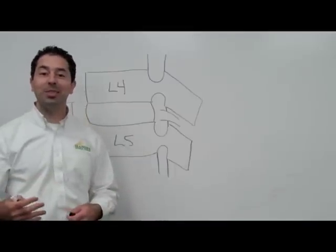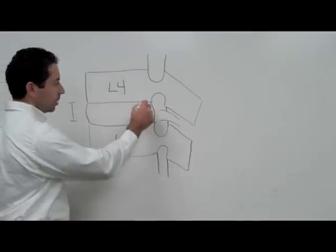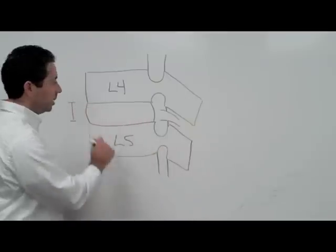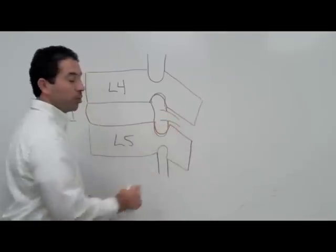Because of injury, because of aging, because of being out of shape, that space can shrink down. As this shrinks down, you get a closing effect. So as that space shrinks down, this hole where the nerve comes out, it's called a foramen, that hole shrinks down.